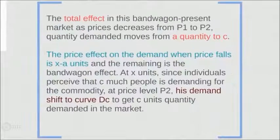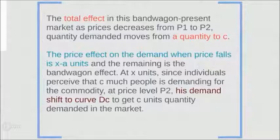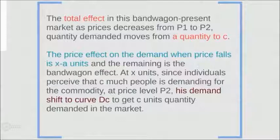The total effect in this bandwagon market: as price decreases from P1 to P2, quantity demanded moves from quantity A to C. The price effect on demand when price falls is X minus A units, and the remaining is the bandwagon effect. At X units, since individuals perceive that C many people are demanding the commodity at price level P2, his demand curve shifts to DC to get C units of quantity demanded in the market.